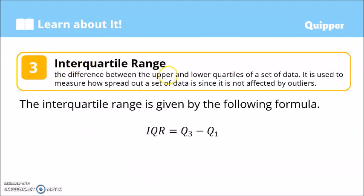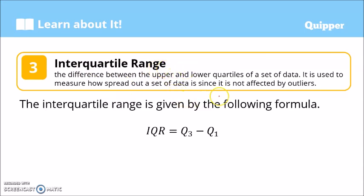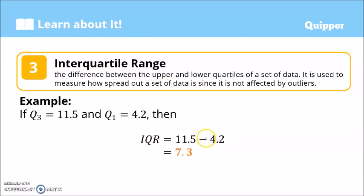Next, we have the interquartile range. The interquartile range is the difference between the upper and the lower quartiles of the set of data. The upper quartile refers to the third quartile, and the lower quartile refers to the first quartile. It is used to measure how spread out a set of data is since it is not affected by outliers. So: Q sub 3 minus Q sub 1. For example, if our third quartile is 11.5 and the first quartile is 4.2, the interquartile range equals 11.5 minus 4.2, which gives us 7.3.